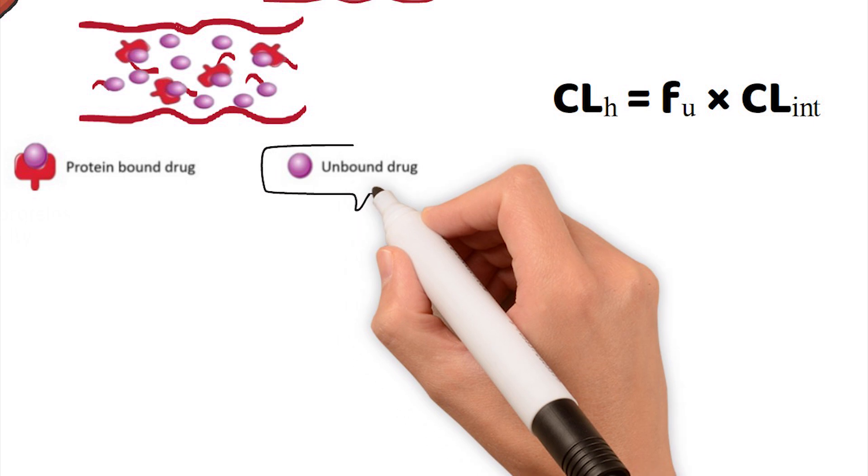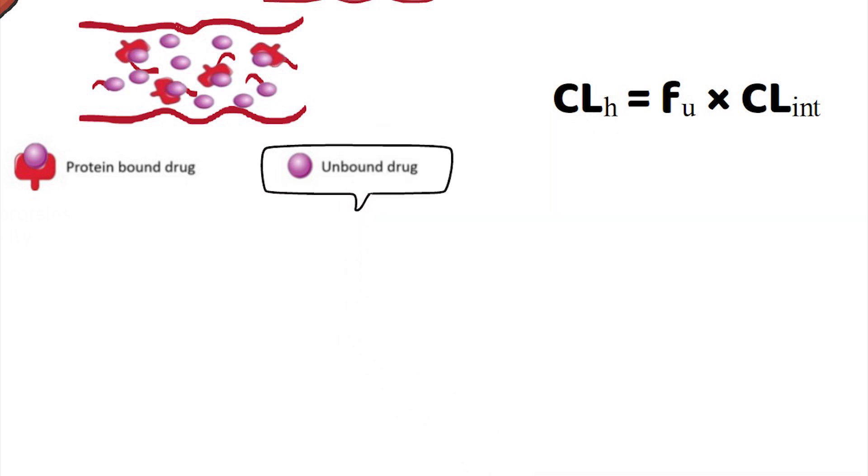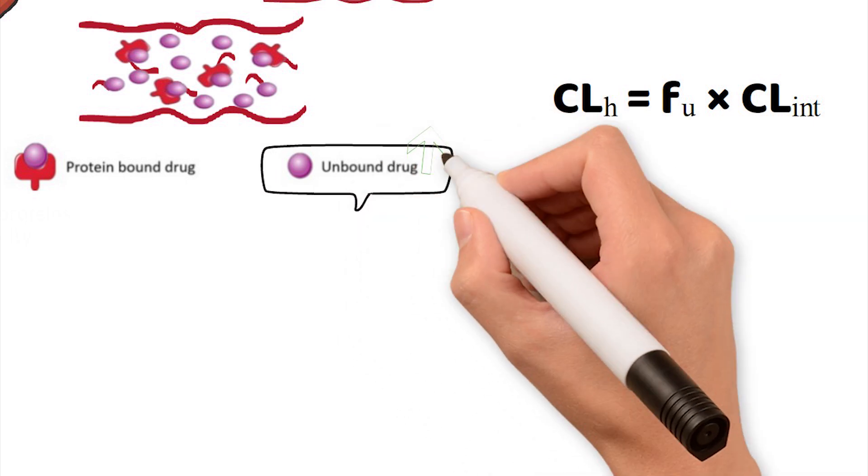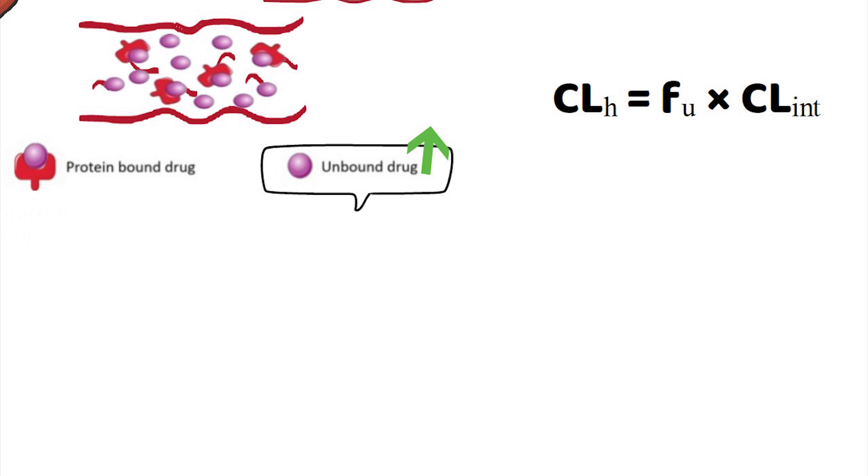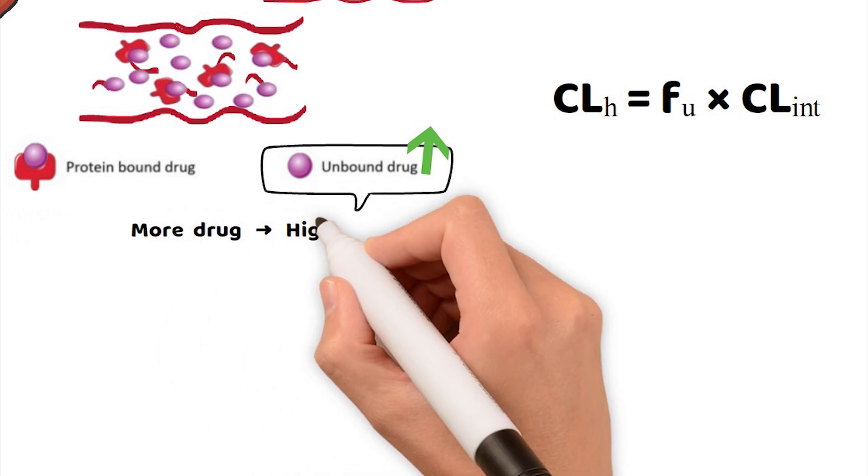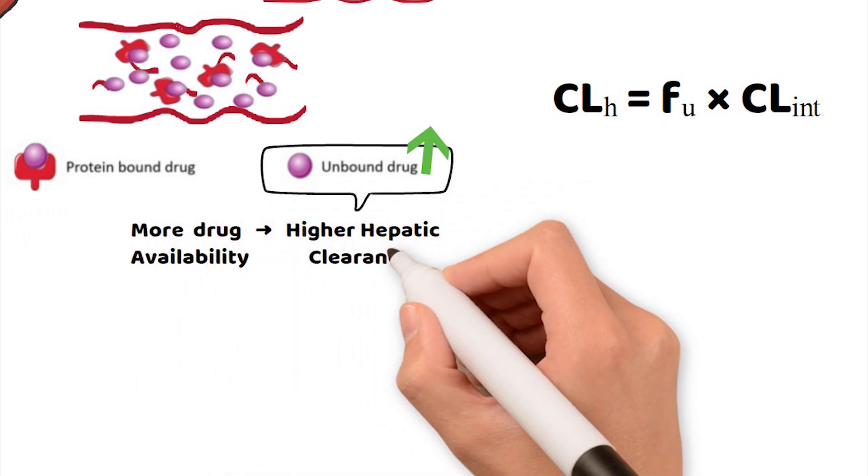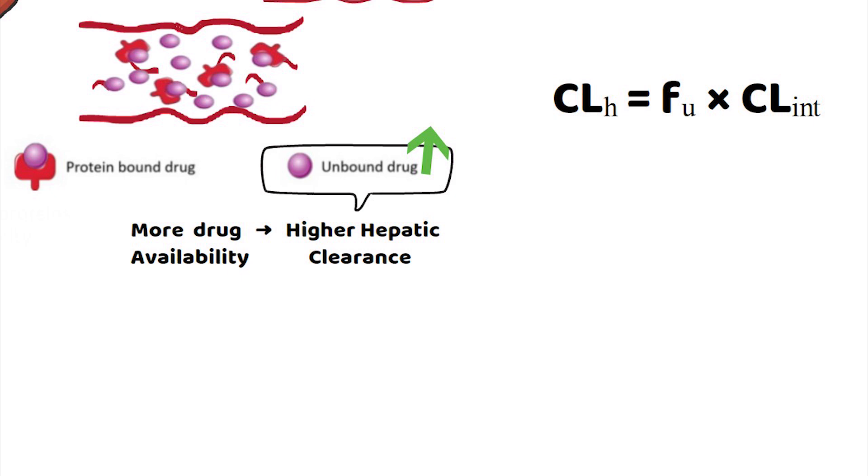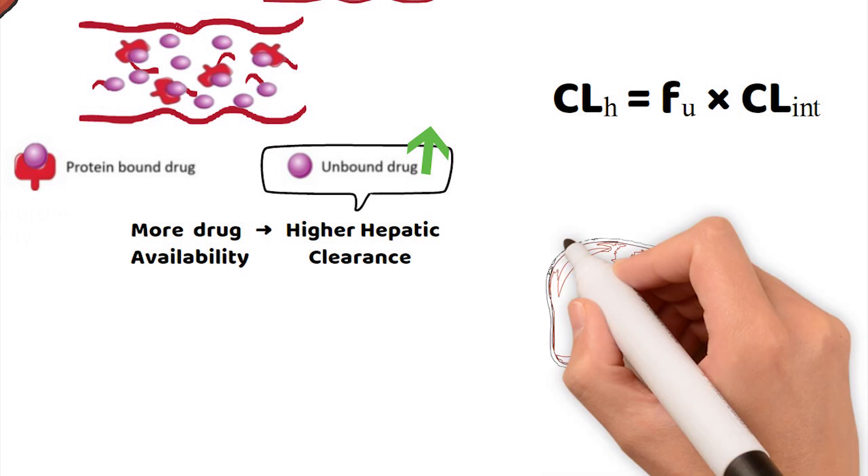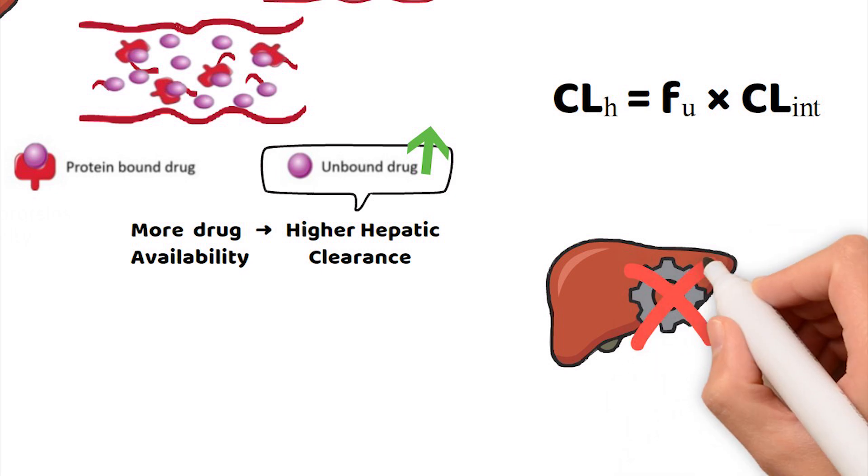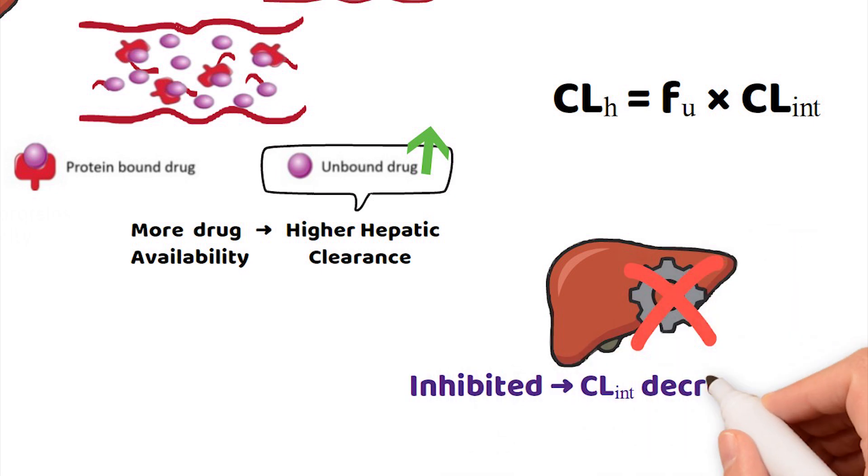So, if the unbound fraction increases, for example, due to displacement from plasma proteins, more drug becomes available for metabolism, and hepatic clearance increases. Likewise, if the liver enzymes are inhibited or induced, intrinsic clearance will decrease or increase respectively, directly affecting how much drug is cleared.